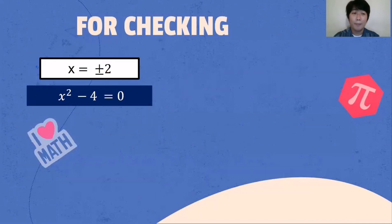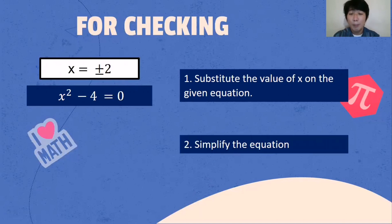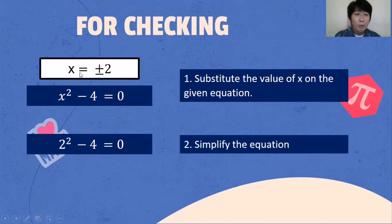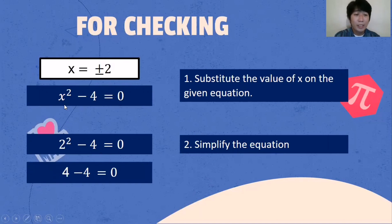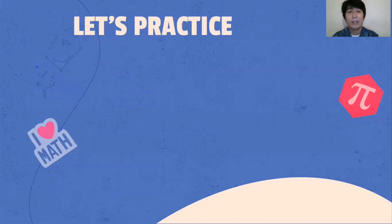Let's try to check the values of X — positive and negative 2 — on the given equation. Ways on how to check: substitute the value of X on the given equation, then simplify. Substituting X = 2: 2 times 2 is 4 minus 4, that is 0. If X = negative 2: negative 2 times negative 2 is also 4 minus 4, that is 0. That means our answer is correct.